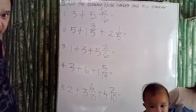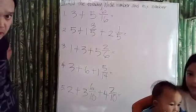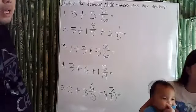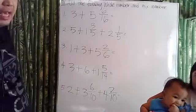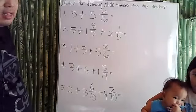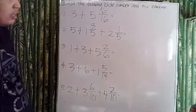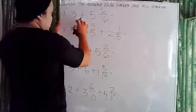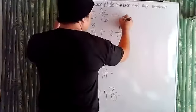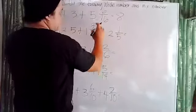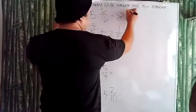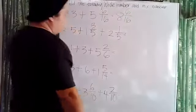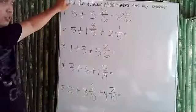Answer number one, which is three plus five and six-tenths. All we need to do is just add the whole numbers and add the fraction. This time we have two whole numbers here, which is three plus five — that's eight — and six-tenths. So our answer is eight and six-tenths.